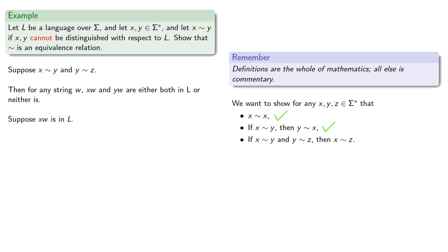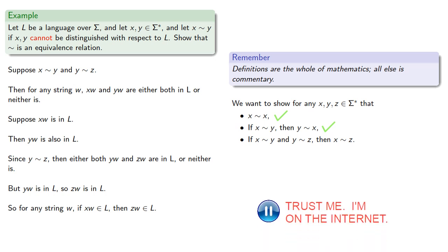Suppose XW is in L, then YW is also in L. Since Y squiggles Z, then either both YW and ZW are in L or neither is. But YW is in L, so ZW is also in L. And so for any string, if XW is in L, then ZW is also in L. By a similar argument, if XW is not in L, then ZW is not in L, and so X squiggle Z.